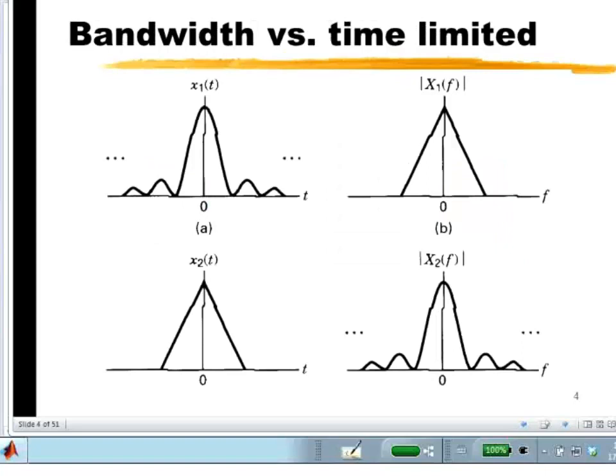I want to point out something directly coming from Fourier analysis. Fourier analysis says, and the examples we have here are a triangular function and its Fourier transform, which is the sinc squared function. Here we have the sinc squared function in the time domain at the top, and on the right we have the Fourier transform of this, which is a triangle.